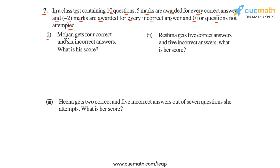Part 1 says Mohan gets 4 correct and 6 incorrect answers. What is his score? Mohan gets 4 correct answers, and because each correct answer is awarded 5 marks — as told in the problem statement — Mohan will get 4 times 5, or 20 marks for his correct answers.